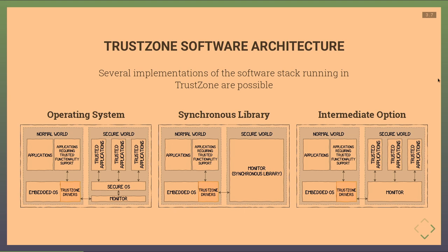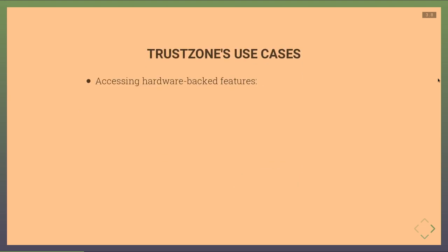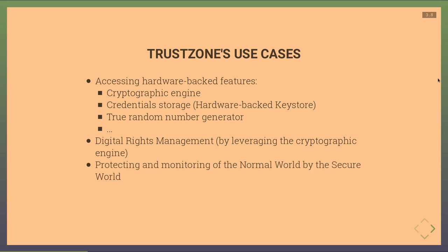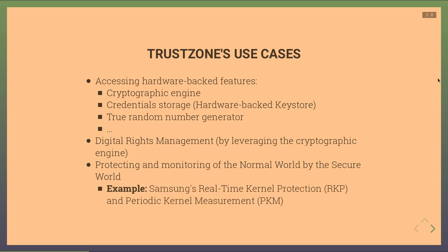TrustZone is most commonly used to access hardware-backed features such as cryptographic engines, credential storage, and the TRNG. These can be used to build more advanced systems like DRMs, and to protect and monitor the normal world from the secure world. Examples include Samsung's RKP (Real-time Kernel Protection) and Samsung's PKM (Periodic Kernel Measurement).